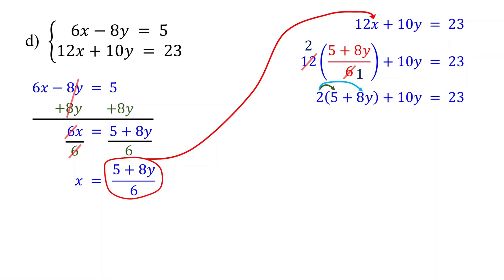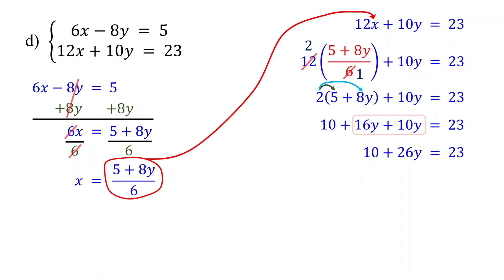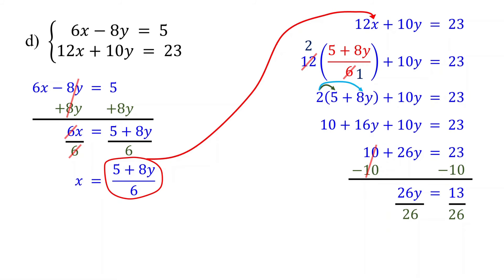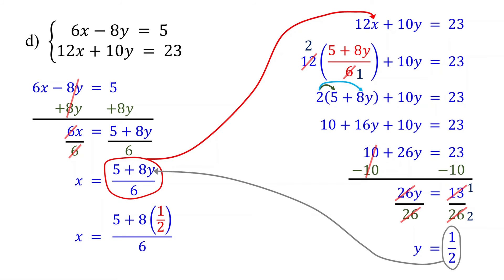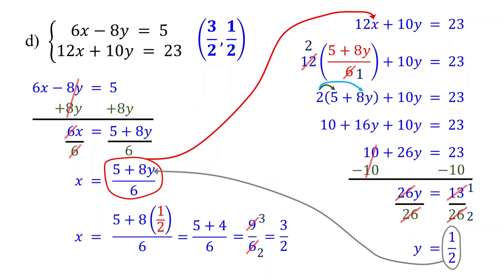Now let's distribute the 2: 2 times 5 is 10, and 2 times 8y is 16y. Then combine like terms to get 26y. Now subtract 10 from each side: 23 minus 10 is 13. To isolate y, divide both sides by 26. You can simplify 13 over 26 to 1 half, so y equals 1 half. Next, find the value of x by plugging in 1 half for y: 8 times 1 half is 4, and 5 plus 4 is 9. Simplifying 9 over 6 by dividing both by 3 gives 3 halves. Therefore, the solution to this system is 3 halves comma 1 half.